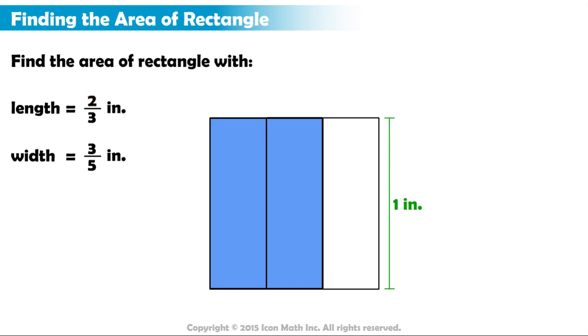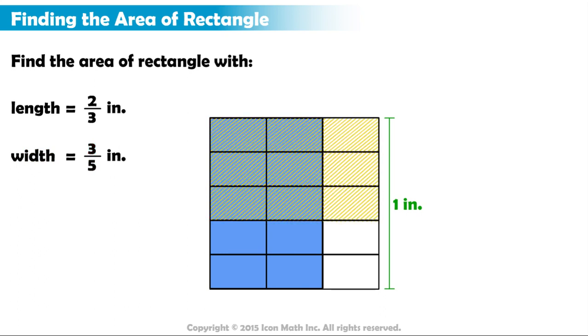Similarly, since the denominator in the width of the rectangle is 5, we divide the unit square horizontally into 5 equal parts. Our numerator for this fraction is 3, so we will shade 3 of the 5 parts in yellow.